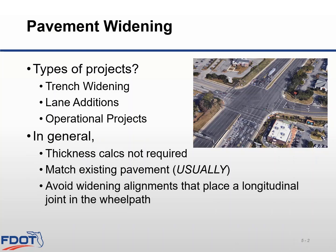In general, widening designs don't typically require thickness calculations, but you'll still need to check your structural number. You need to determine what the existing pavement structure consists of. The widening section should be designed to match the existing pavement structure plus any overlay pavement. The total structural number of the widened section must equal or exceed the total existing mainline structural number.